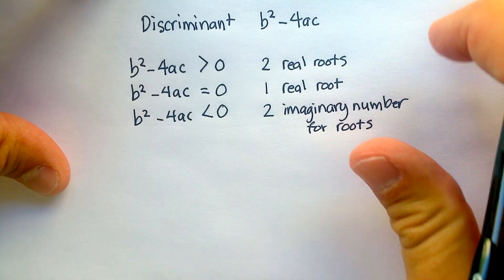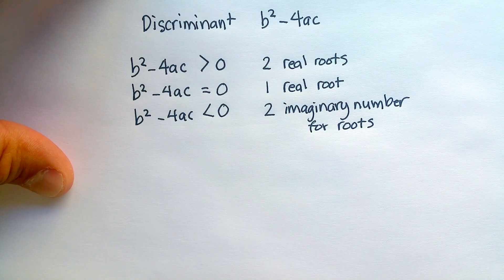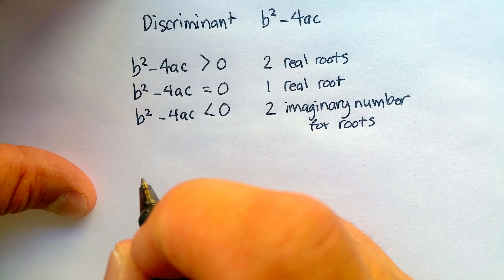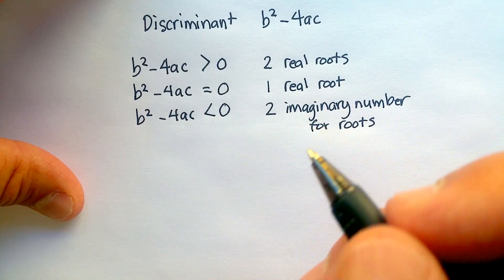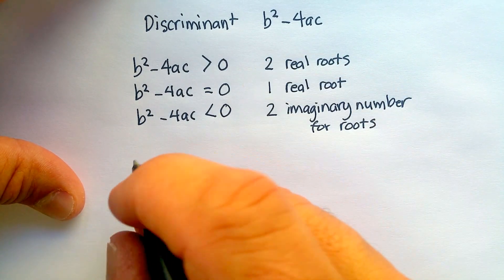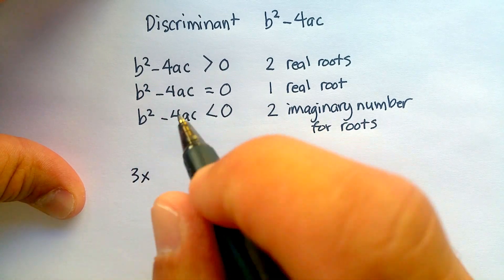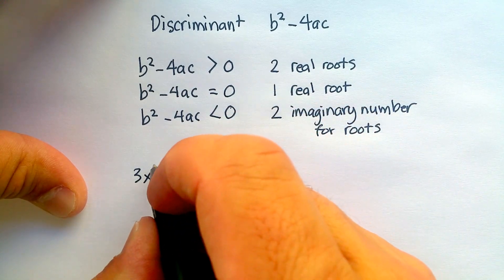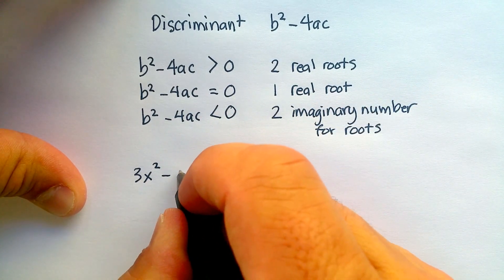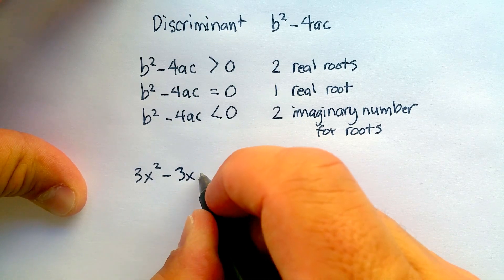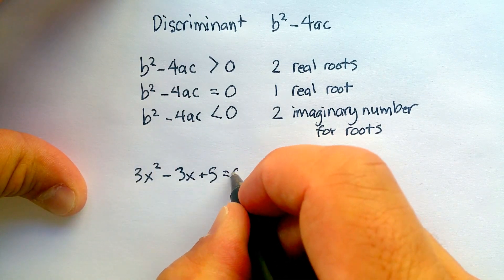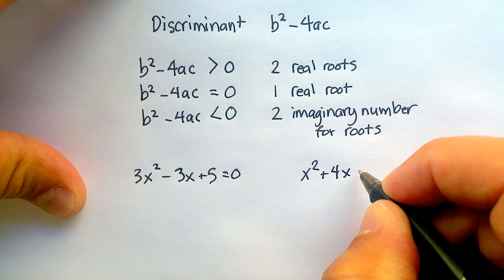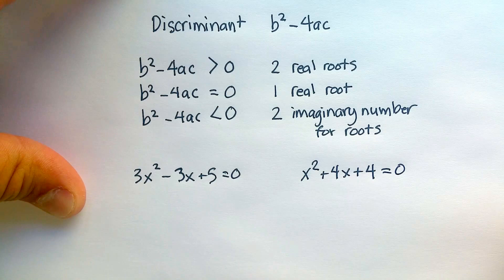Now I'm going to give you a couple of problems, and I want you to figure them out. I will link an answer sheet to this. Here are two quadratic equations. I want you to tell me whether these will have one real root, two real roots, or two imaginary number roots. So, 3x² - 3x + 5 = 0, and then x² + 4x + 4 = 0.